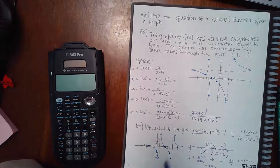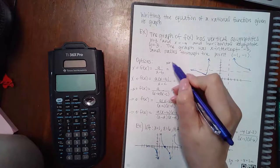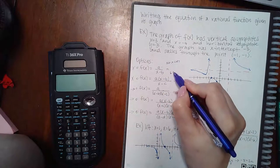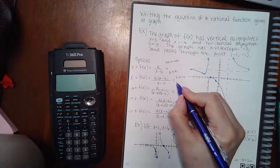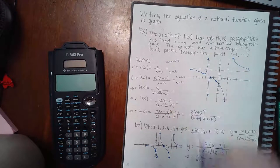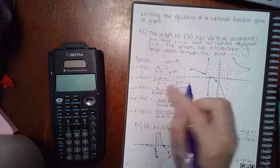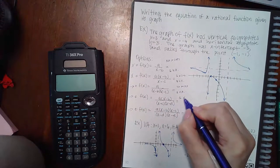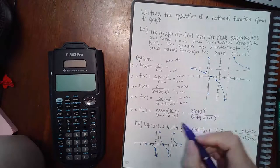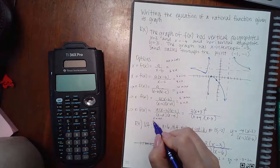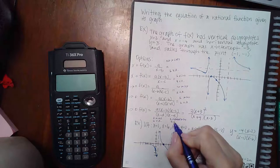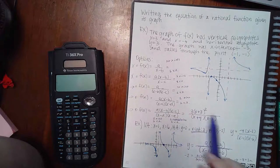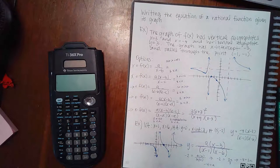So the equation is y = -4(x - 3) / [(x - 1)(x - 6)]. To summarize the options: no x-intercepts with one vertical asymptote; one x-intercept with one vertical asymptote; no x-intercepts with two vertical asymptotes; one x-intercept with two vertical asymptotes; and two x-intercepts (or one repeated) with two vertical asymptotes. That is the end of module 3.3.